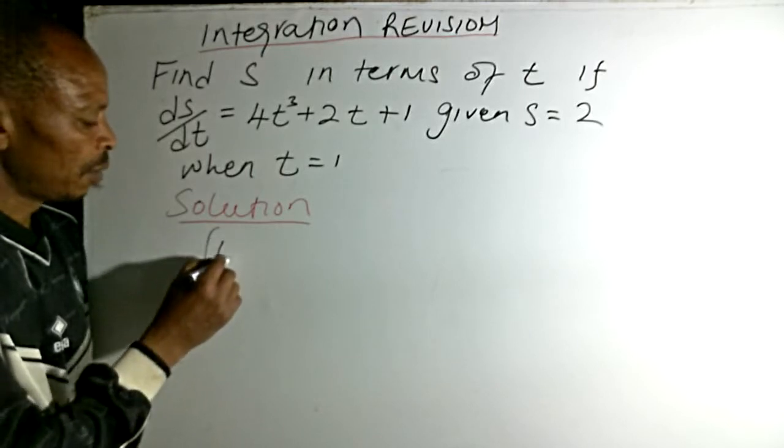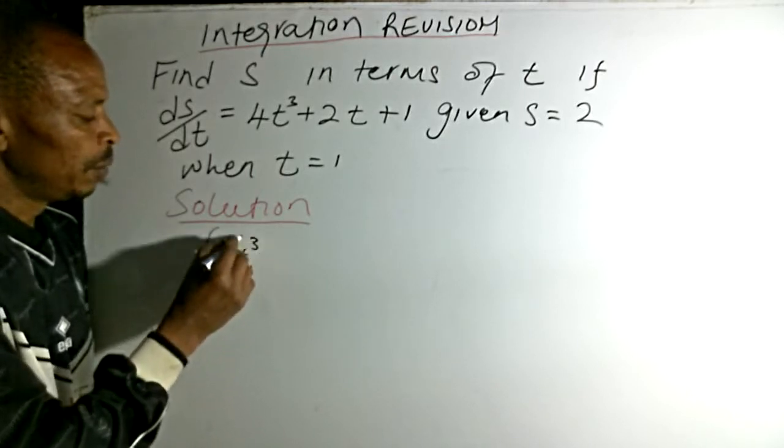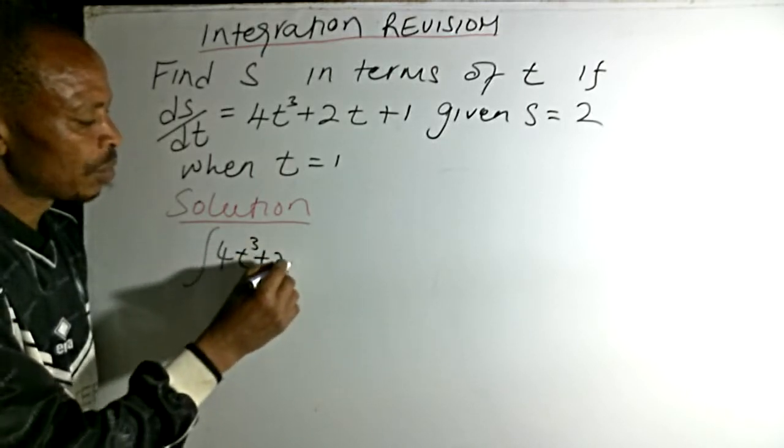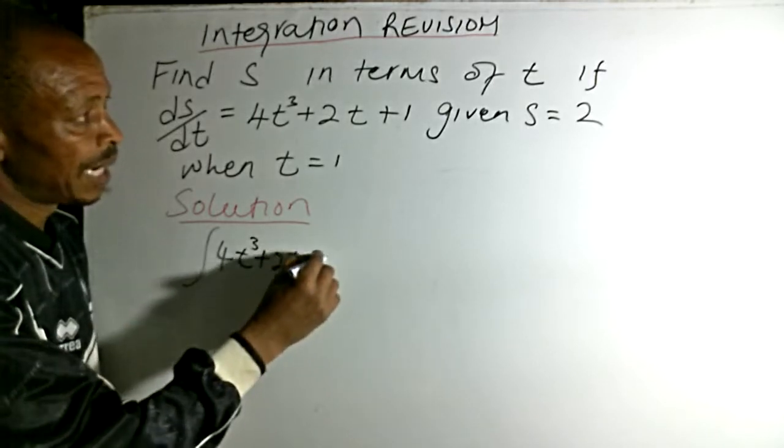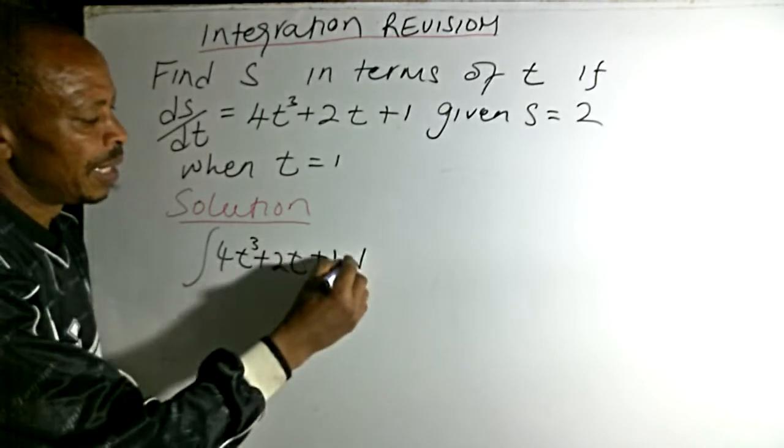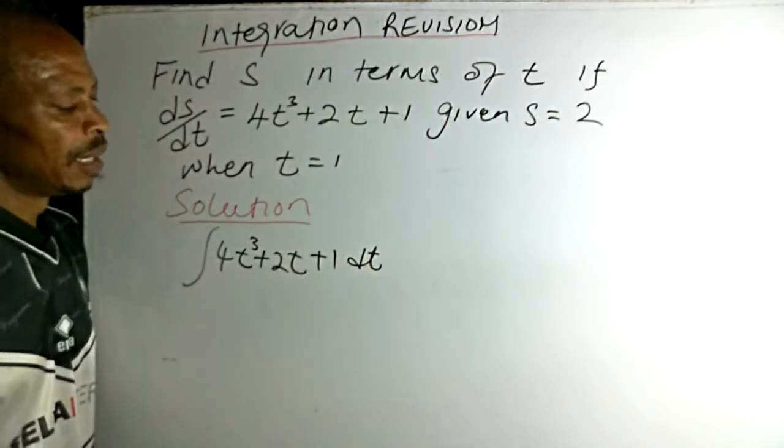We use the integral to integrate 4t³ + 2t + 1 with respect to dt.